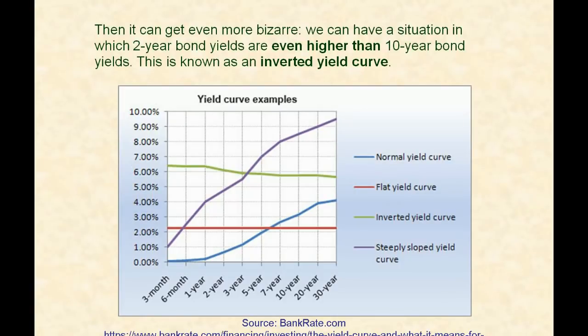Then it can get even more bizarre. We can have a situation in which 2-year bond yields are even higher or greater than 10-year bond yields. This is known as an inverted yield curve.